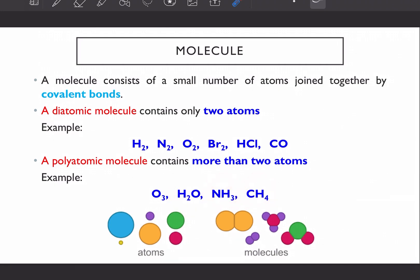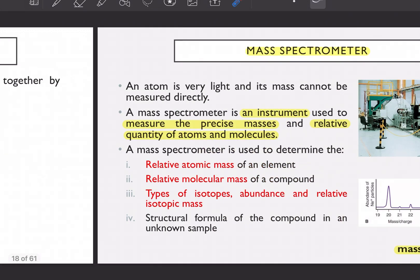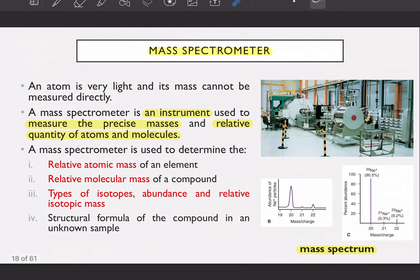Macam here O3 or ozone, H2O water, NH3 ammonia, and CH4 methane. So beza dia antara atoms dengan molecules, you can see that atoms ni dia adalah single sangat. Molecules ni dia bergabung. That's the first part of my video explanation for 1.1.